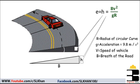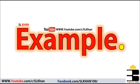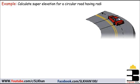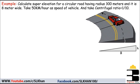To determine the full super elevation we will solve a problem. We are asked to calculate the super elevation for a circular road having radius equal to 300 meters and width of 8 meters. We are also given a vehicle speed of 50 kilometers per hour and a centrifugal ratio equal to 1 divided by 10.